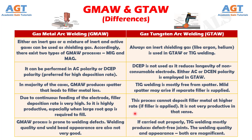Number nine: gas metal arc welding process is prone to welding defects, and the welding quality and weld bead appearance are also not very good. Whereas if carried out properly, TIG welding mostly produces defect-free joints, and the welding quality and appearance both are magnificent.